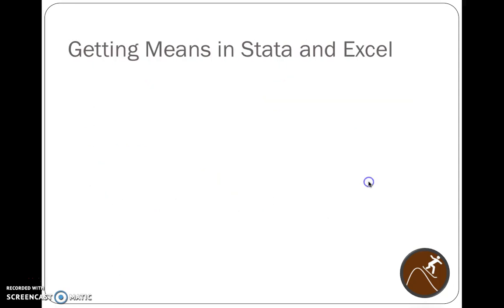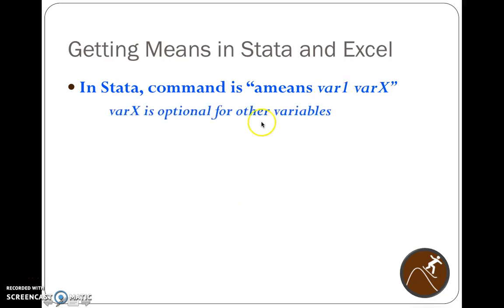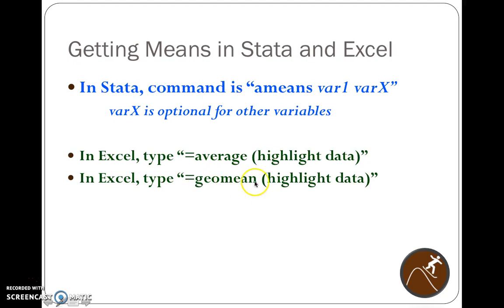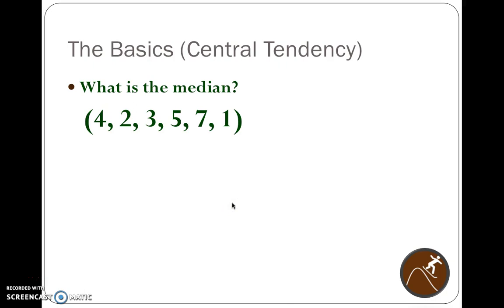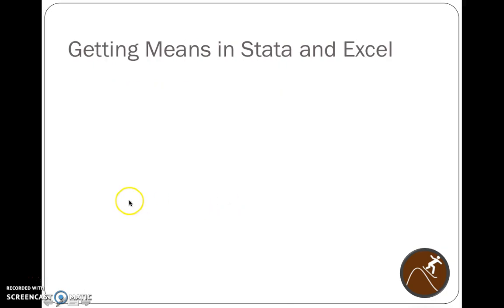We can do this in Stata and Excel. In Stata, to get the arithmetic and geometric mean, you can do multiple variables or just one at a time. So variable x is optional here. You only have to do one. If you have five variables, it'll give them all at once. In Excel, we highlight the data, and in Excel we can also highlight the data for the command AVERAGE and for the command GEOMEAN. So we'll do a few examples here in a second.